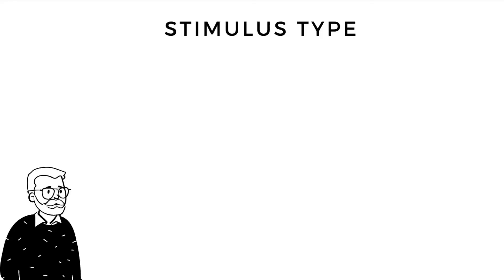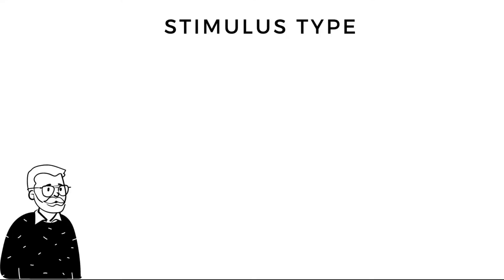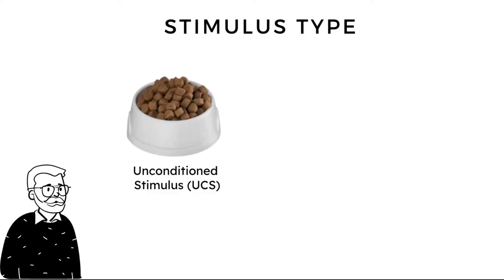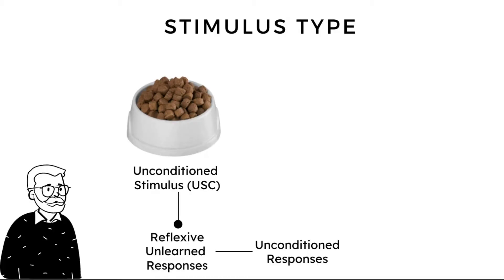Let's see what Pavlov did in his experiments to help us understand classical conditioning. Before we proceed, let's get some terminology right. The concept of stimulus type in the context of classical conditioning is important, as we deal with different types of stimuli. The first is the unconditioned stimulus or UCS — these include any stimulus such as food that elicits a reflexive, unlearned response such as salivation. These reflexive, unlearned responses are referred to as unconditioned responses, as they occur without any deliberate conditioning or learning.